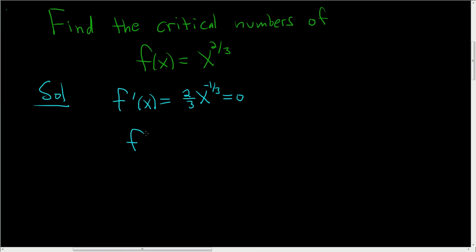So we can rewrite this. f prime of x is equal to 2 over 3x to the 1/3rd, and we set this equal to 0. Well this equation has no solution.